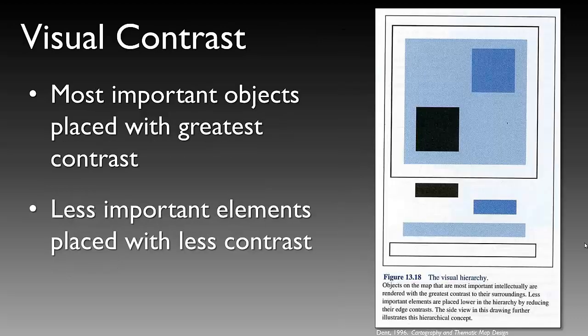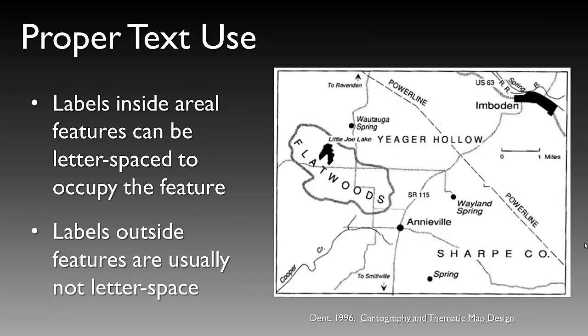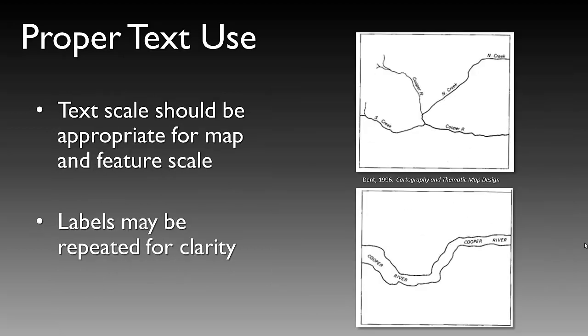Visual contrast is incredibly important because the most important objects should be placed with the greatest contrast, and less important elements should be placed with less contrast. Ensuring proper text use and placement is critical to understanding a map. Labels inside areal features can be letter-spaced or occupy that feature entirely. Labels outside features are usually not letter-spaced and are well placed near the object they represent. Text scale should be appropriate for the map and feature scale, and labels may be repeated for clarity but not overly so.